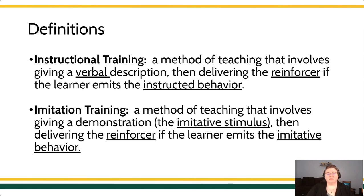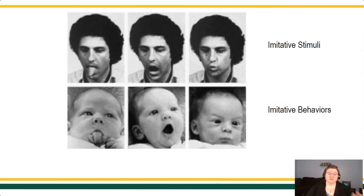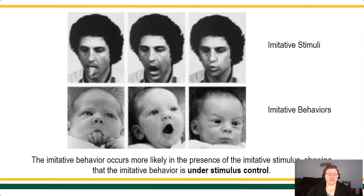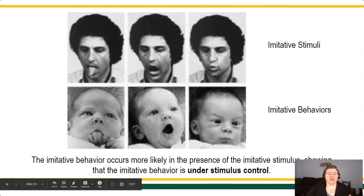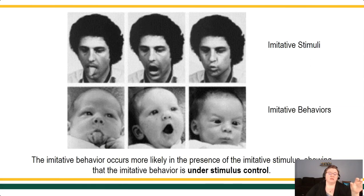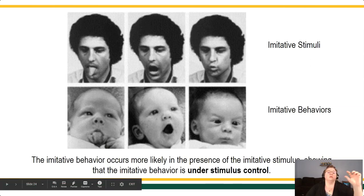We have all of these really lovely examples of imitation happening. In fact, it's sort of a hardwired response. We see that imitation is possible even for very young learners. In some foundational developmental research, researchers were providing this imitative stimulus of different facial expressions, and then they would see if young infants would replicate those responses — and they found that imitation did occur. The imitative behavior is more likely to occur in the presence of the imitative stimulus, and this shows that the imitative behavior is under stimulus control of that imitative stimulus. The behavior is more likely to occur in the presence of the stimulus than in its absence — this is stimulus control.